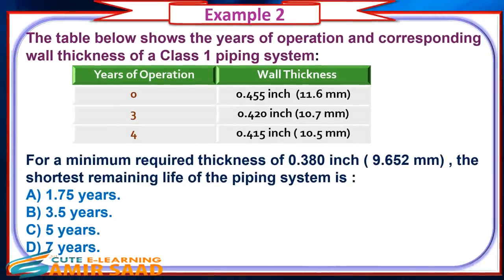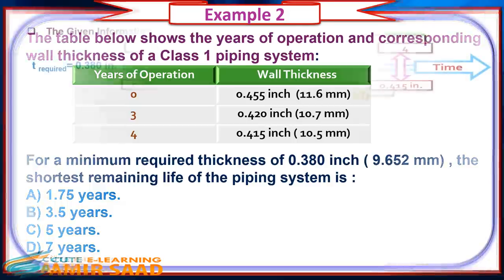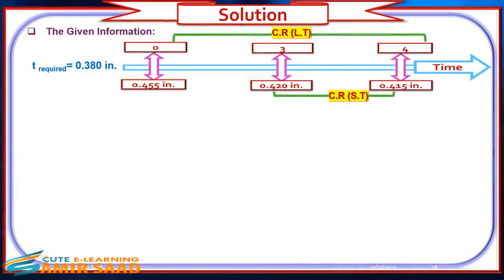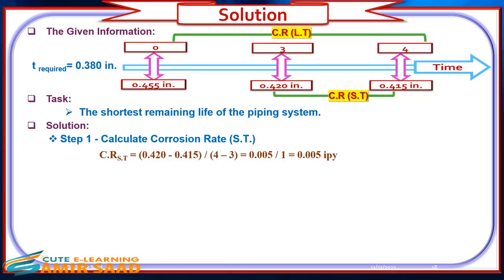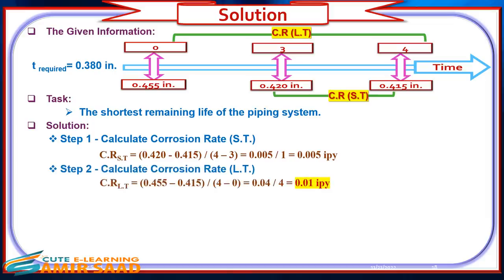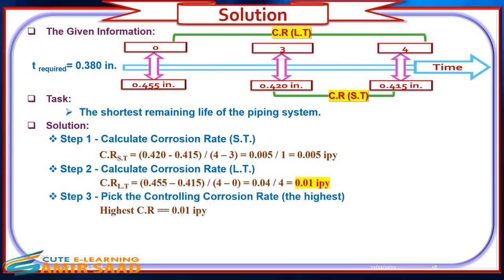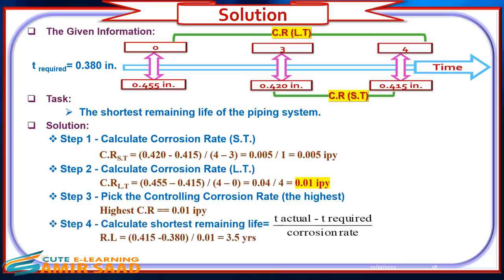Example 2: The table shows years of operation and corresponding wall thickness for a Class 1 circuit with a minimum required thickness of 0.380 inch. What is the shortest remaining life of the piping system? Solution: Step 2: Calculate the short-term corrosion rate. Step 3: Calculate the long-term corrosion rate. Step 4: Pick the controlling corrosion rate — the highest. Step 4: Calculate shortest remaining life. The answer is B: 3.5 years.